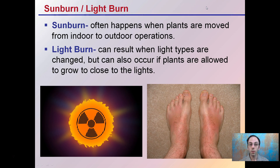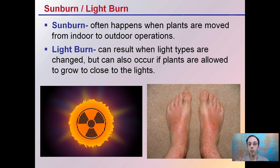Sunburn or light burn — sunburn often happens when plants are moved from an indoor to an outdoor operation. Light burn can also result when light types are changed, or if the plant is allowed to grow too close to the lights. That can cause burning to the plants, damage to the leaves, and permanently stunt those apical meristems, or the growing tips of the plant.